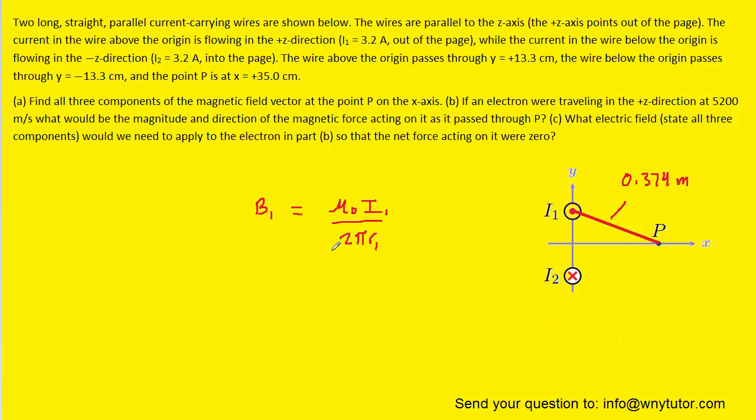Next, we can calculate the magnetic field that wire 1 is producing at point P by plugging in the known values into this equation.